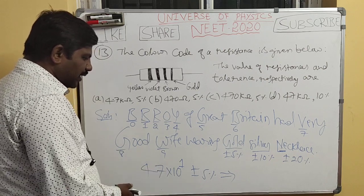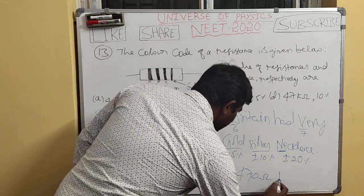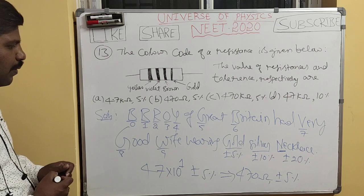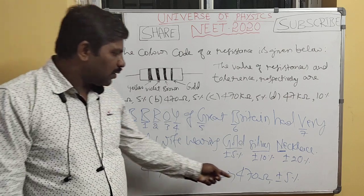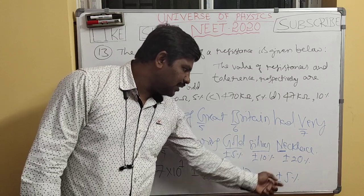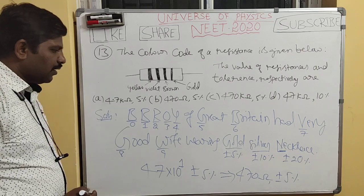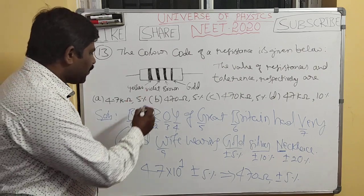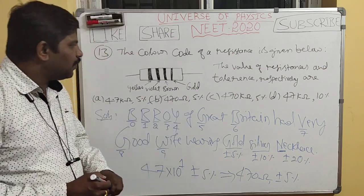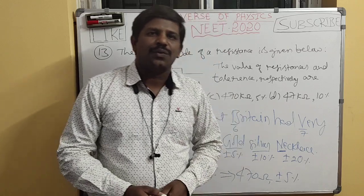The final value of the resistance is 470 ohms with a tolerance of ±5%. Therefore, the correct option is option B: 470 ohms ±5%. If you liked this video, please like, share, and subscribe. Thank you!